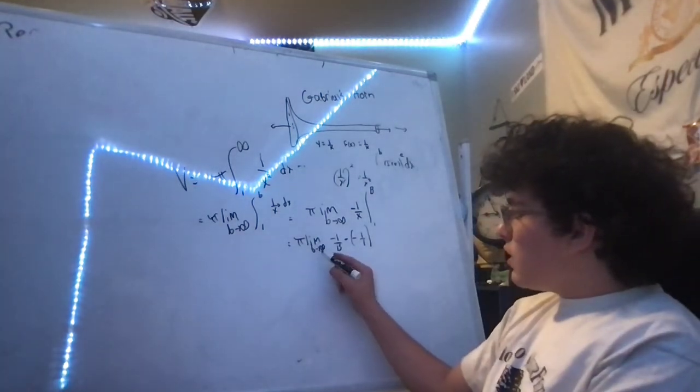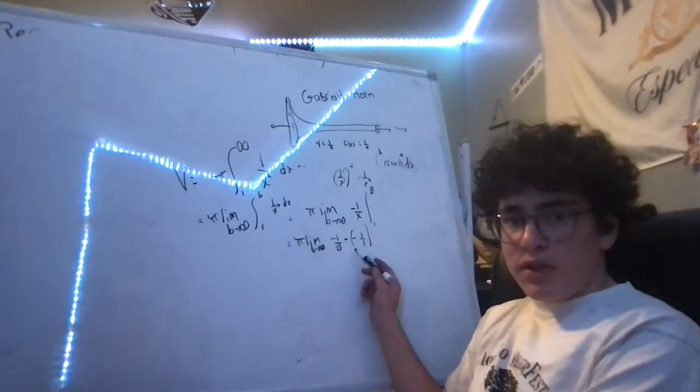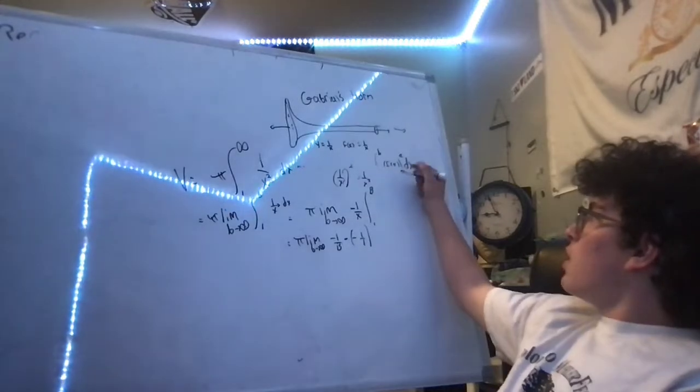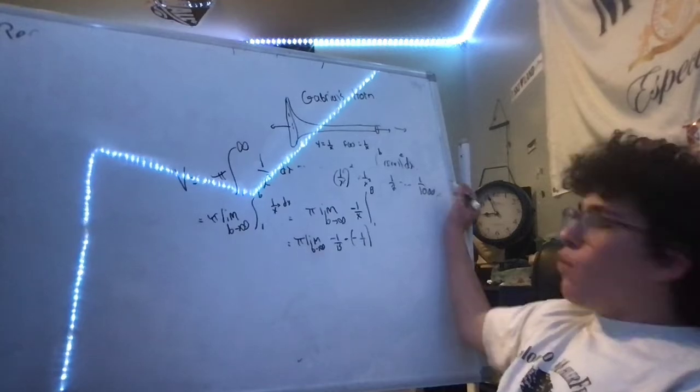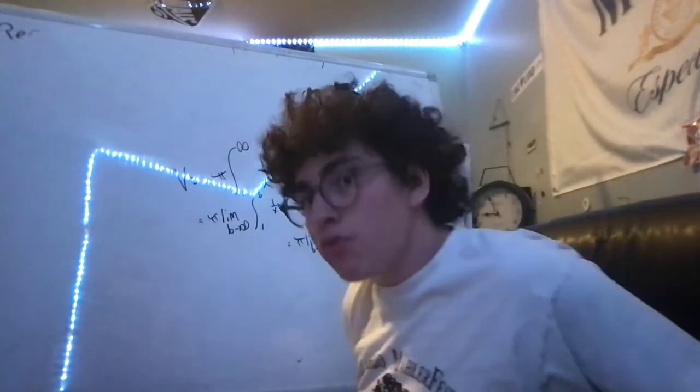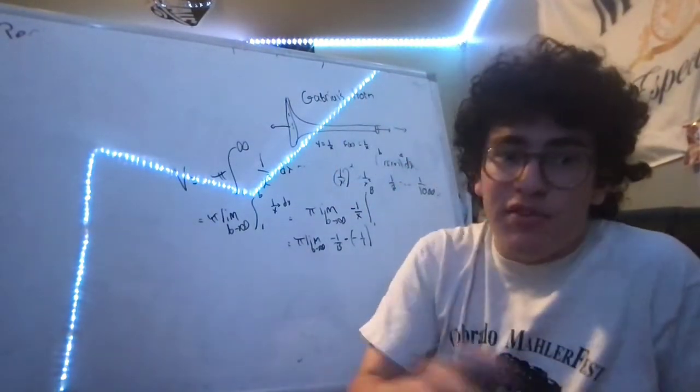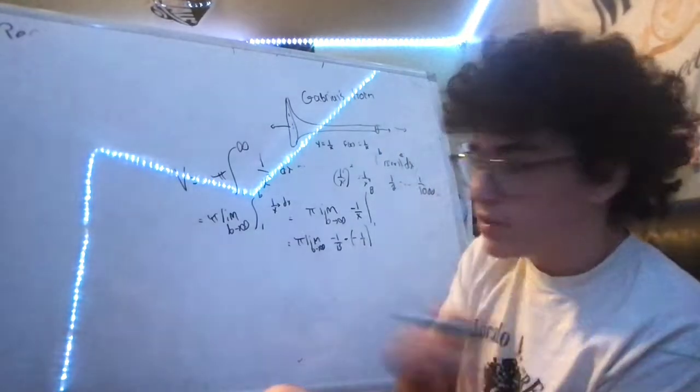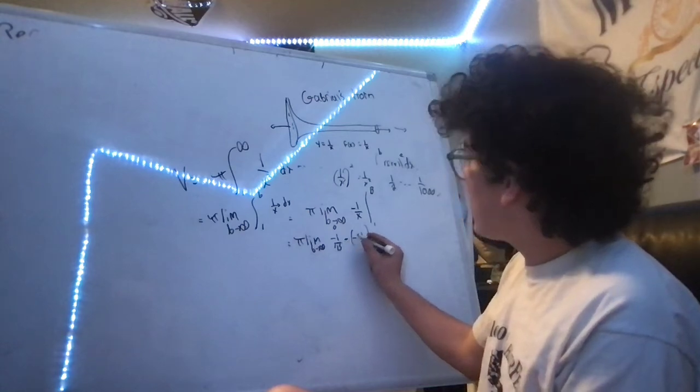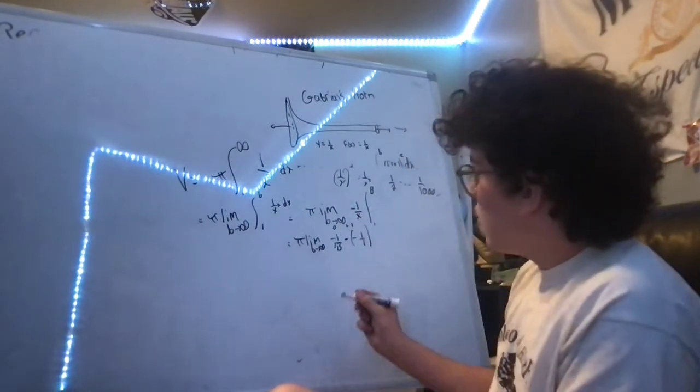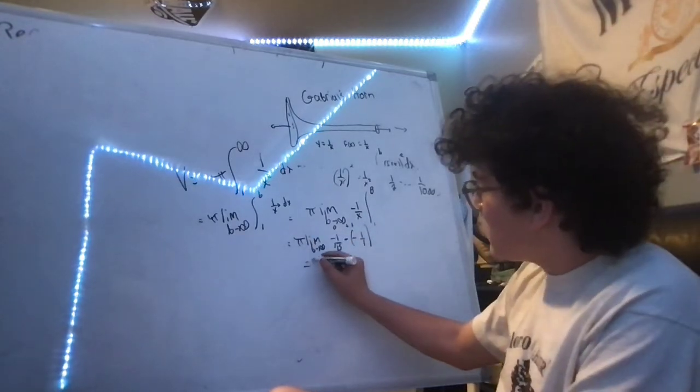As the bottom gets infinitely large, we know that this is going to become really small. We have 1 over 2, then 1 over 1,000, then 1 over like a million. That's a really small number because as the denominator grows, the sum of the fraction is going to shrink. With some simplification, this is going to be 0, and minus negative 1 over 1 is the same as plus 1. So we have limit as b approaches infinity of 1 times pi, which means this is pi.